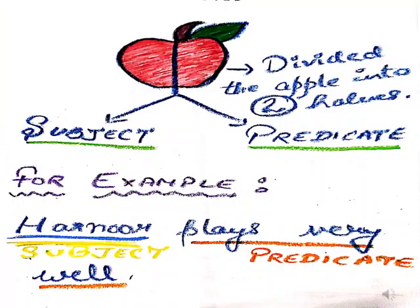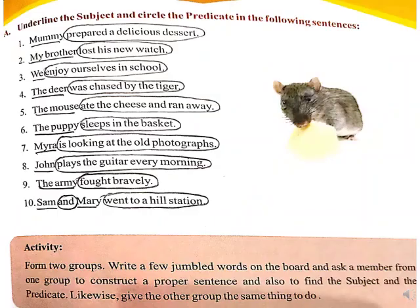In this slide I have shown that in a sentence two parts are there — subject and predicate — which I have shown with the help of an apple divided into two halves. I have also given examples which you can copy down in your notebooks. In page number 7, underline the subject and circle the predicate. I hope you all have done it in your book — check whether you have done it correctly, and the rest do in your notebook as mentioned earlier.